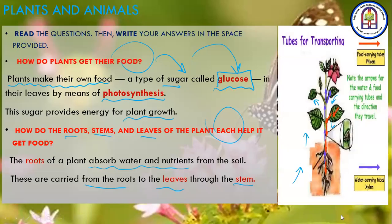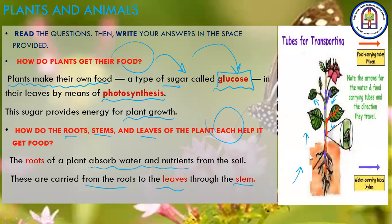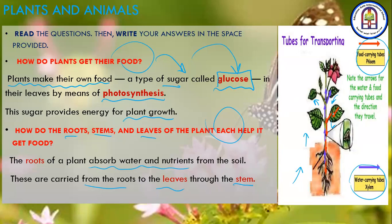Pay attention: the water-carrying tubes are called xylem — these are like very small tubes that carry the water up the plant. The food-carrying tubes are called phloem. Phloem carries the food to all the parts of the plant. And here we come to the end of our session for today. Thank you, guys. See you in the next part. Goodbye.